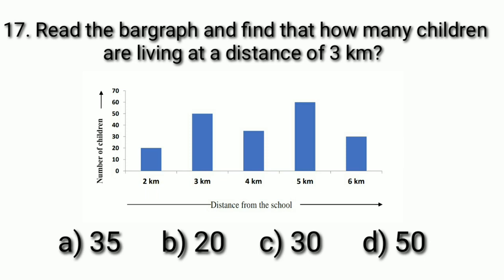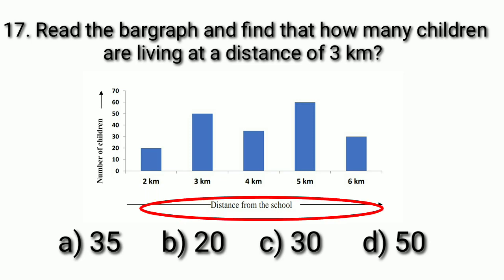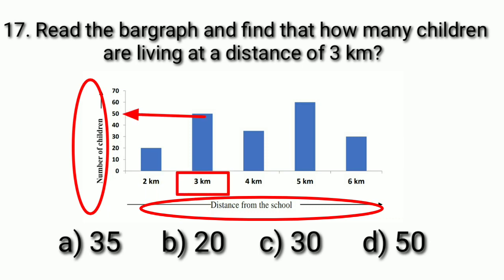Question number 17 is: read the bar graph and find how many children are living at a distance of 3 km. Dear students, look at the bar graph carefully. On one side, the distance from school is given, and on the other side, the number of children is given. The number of children living at a distance of 3 km is 50. Option A is 35, option B is 20, and option C is 30 — none are correct. Option D is 50, which is correct, so we put a tick at it.